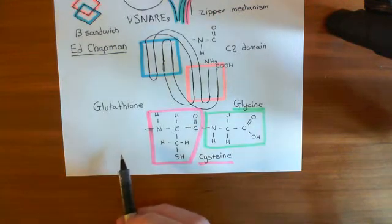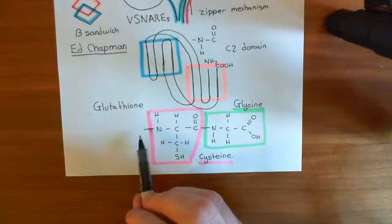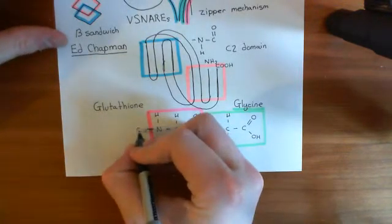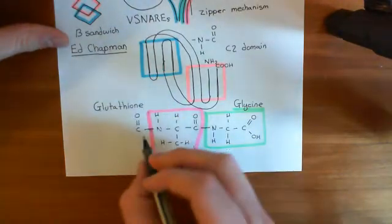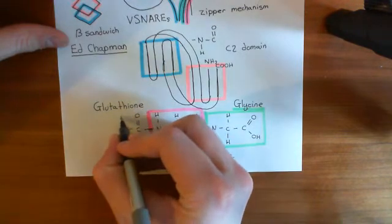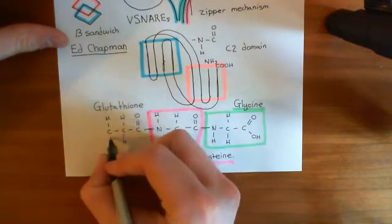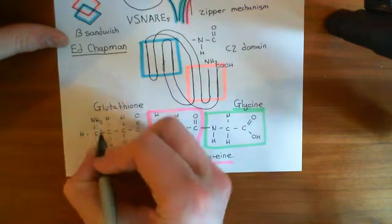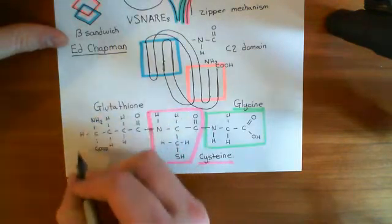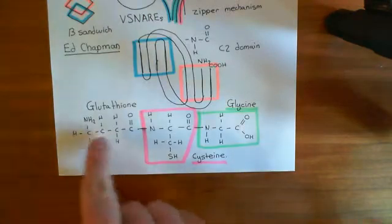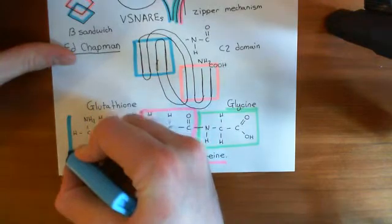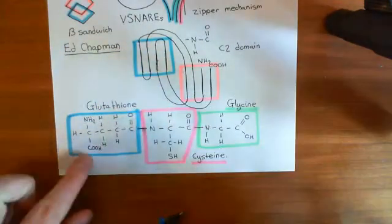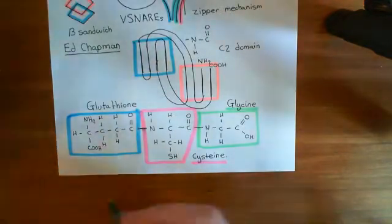Now we're going to have glutamate, but it's not going to be bound by its carboxylic acid group which forms the backbone of the amino acid. Instead, it's going to be bound by the carboxylic acid of its R group. So this is the carboxylic acid group of the R group of glutamate, and then we have the rest of the R group — the two methylene groups which are the R group of glutamic acid or glutamate. Here's the alpha carbon, the hydrogen off the alpha carbon, the amino group and the carboxylic acid group. We've bound glutamate to the cysteine, but not in the conventional way. If we were just making a tripeptide, we'd have bound glutamate via the backbone carboxylic acid, but we haven't — we've made glutathione instead.